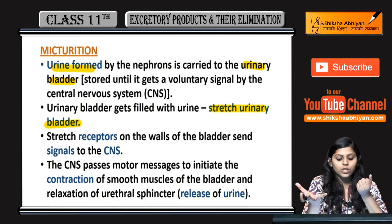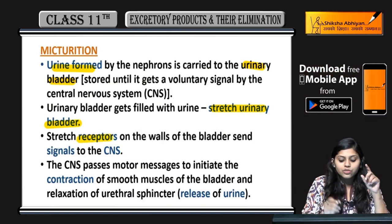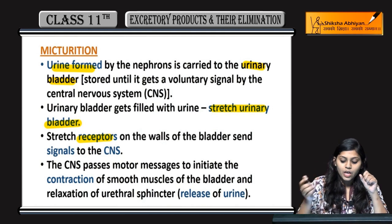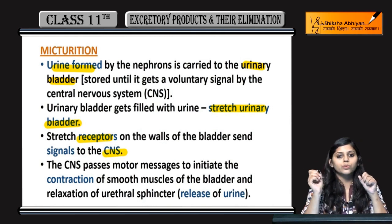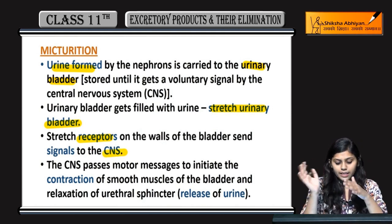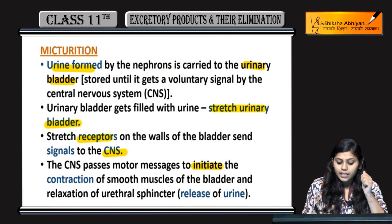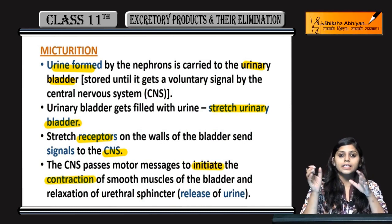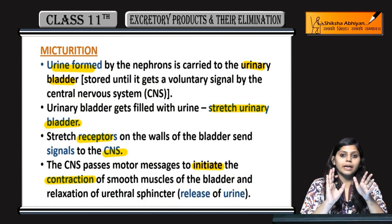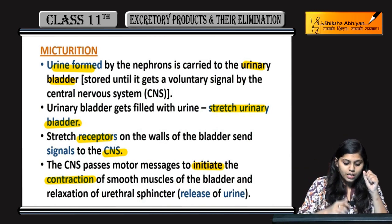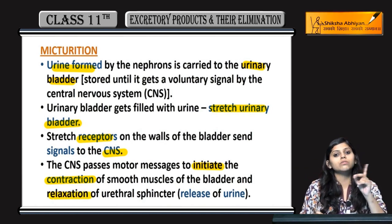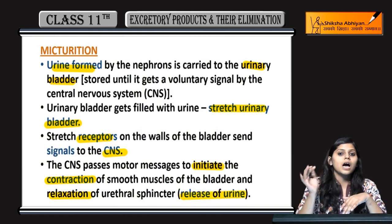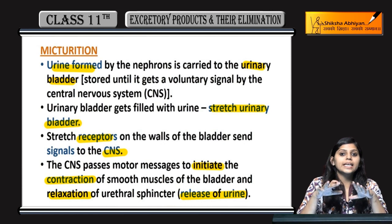Jab urinary bladder stretch hona shuru ho jayega, stretch receptors jo present honge urinary bladder mein woh signal karengh CNS ko. CNS pass karega motor message taki initiate ho sake contraction of smooth muscles of the bladder. Contraction hogi aur relaxation hogi urethral sphincter ki, jiski wajah se urine will be released out of the body.